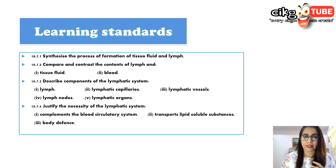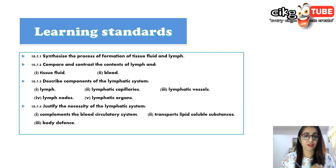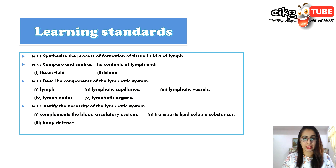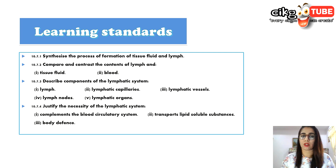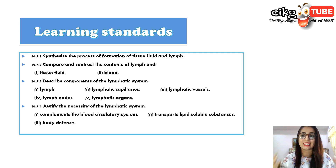Let's look at the learning standards for this subtopic. First, you must be able to synthesize the process of formation of tissue fluid and lymph, compare and contrast the contents of lymph, tissue fluid, and blood, describe the components of the lymphatic system — lymph, lymphatic capillaries, lymphatic vessels, lymph nodes, and lymphatic organs — and justify the necessity of the lymphatic system, which complements the blood circulatory system, transports lipid-soluble substances, and supports body defense.